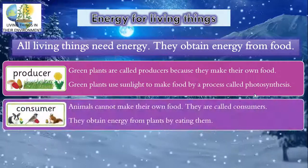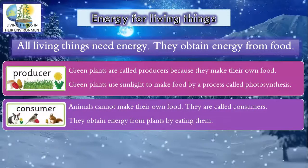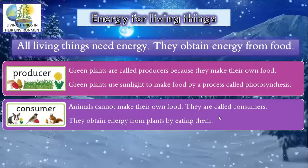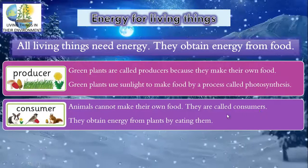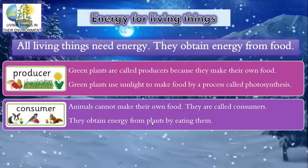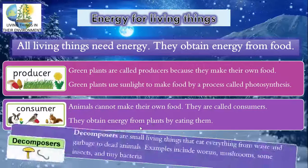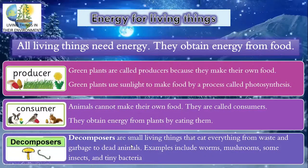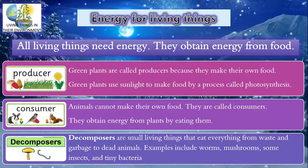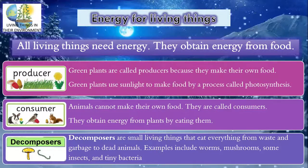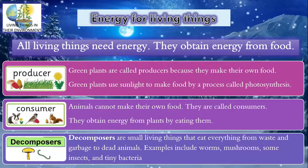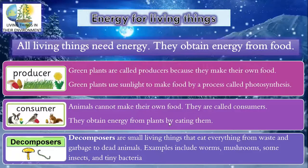Consumers are those who obtain energy from plants. Animals cannot make their own food, so they are called consumers — they obtain energy from plants by eating them. Decomposers are small living things that eat everything from waste and garbage to dead animals. Examples include worms, mushrooms, some insects, and tiny bacteria.